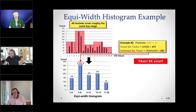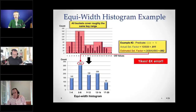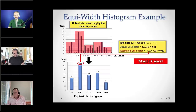Let's take a slightly different example. The actual selectivity factor for customer 5 is 10 reviews over 939, so about 1%. The estimate looks up customer 5 in the histogram range 5 to 8, finds 309 reviews total and four values, so we divide 309 by 4 then by 939 and get 8%. So the equal width histogram for this particular predicate is off by a factor of 8. This is the kind of thing that happens to query optimizers all the time — statistics might not be up to date, or the histogram doesn't capture distinct values very well.